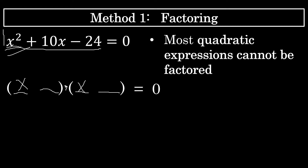Think about the factors of 24: 1 and 24, 2 and 12, 3 and 8, 4 and 6. One of those pairs of factors has a sum of 10. Because the product has to be negative 24, one of the factors must be positive and one must be negative. Between those four pairs, the only pair that can be arranged to have a sum of positive 10 are positive 12 and negative 2.